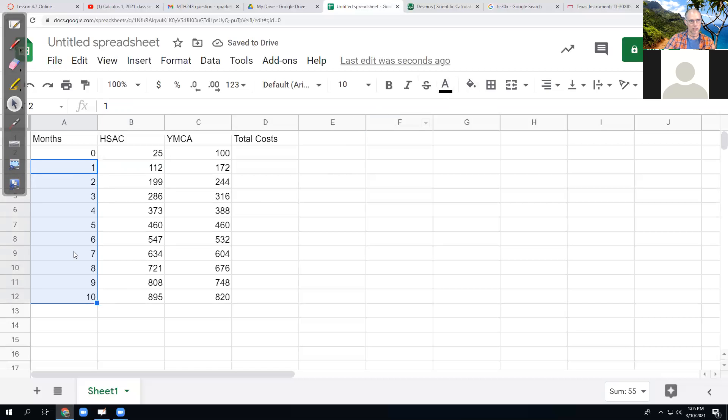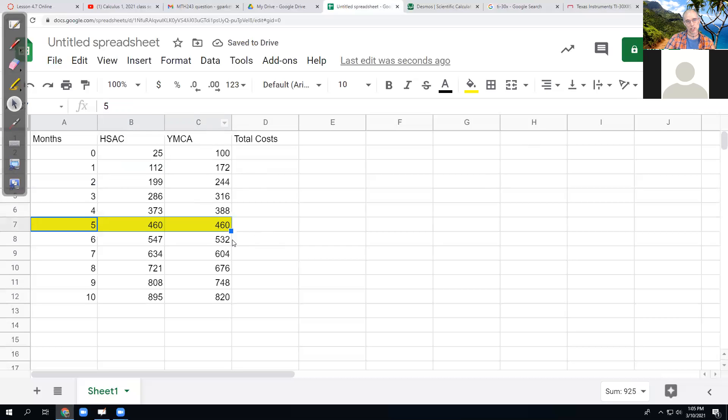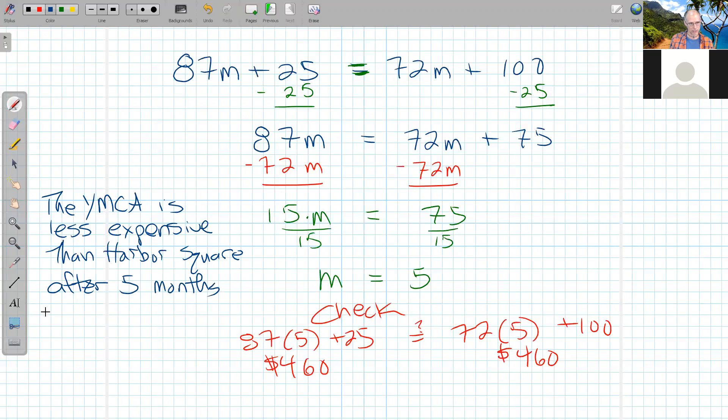What I can see is that in the fifth month, they are equal. So it's after the fifth month that YMCA costs less, in the sixth month and on. Based on this, I could say the YMCA is less expensive than Harbor Square after five months.